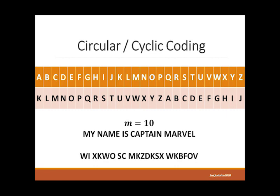Applying the Caesar Cipher principle with A equal to K, we now list all the other letters and append A to J after Z. So with cyclic coding with m = 10, 'My name is Captain Marvel' becomes a new encrypted message. For clarifications on this one, you can comment your questions.